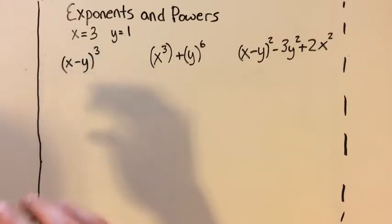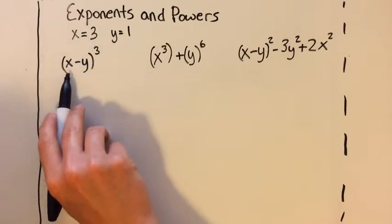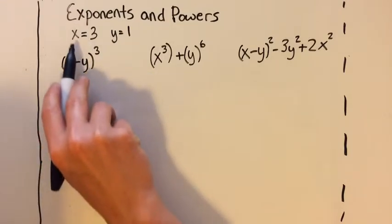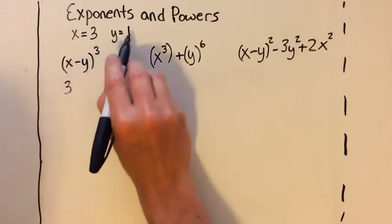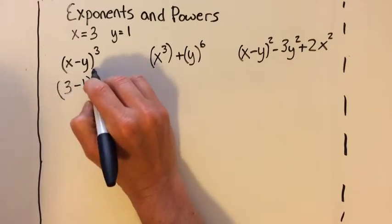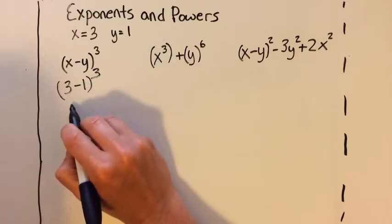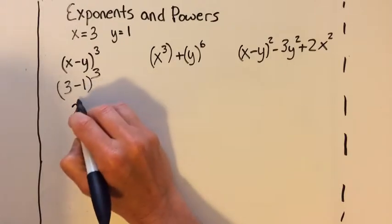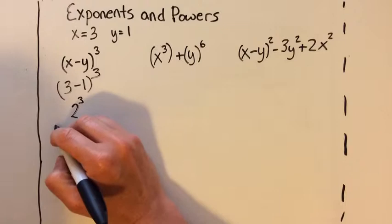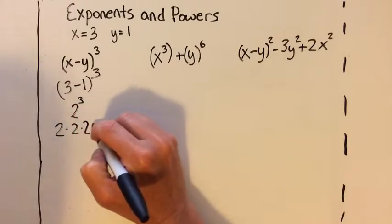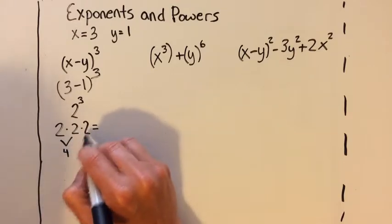For the first expression, we're going to simply substitute our variables. We're going to substitute x and y, and now we're going to evaluate. So 3 minus 1 is 2, and it's going to the third power. So 2 times 2 times 2... I know 2 times 2 is 4, and 4 times 2 is 8. So that's our answer for the first one.